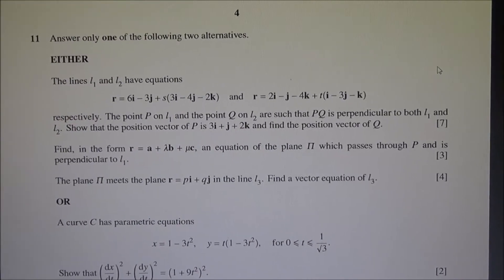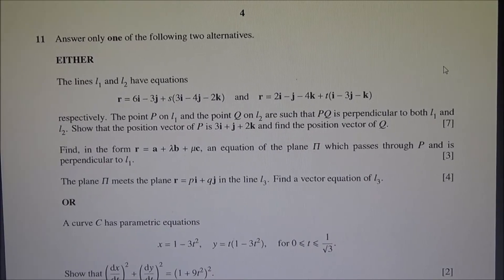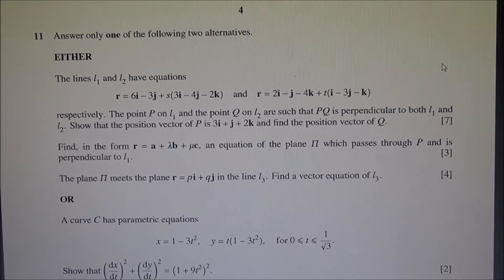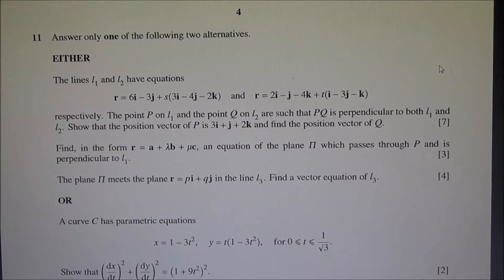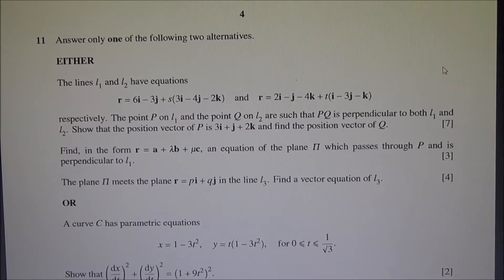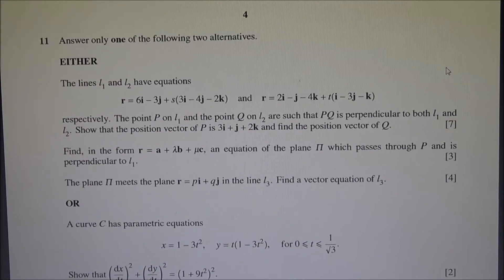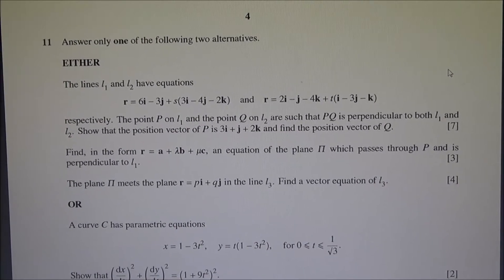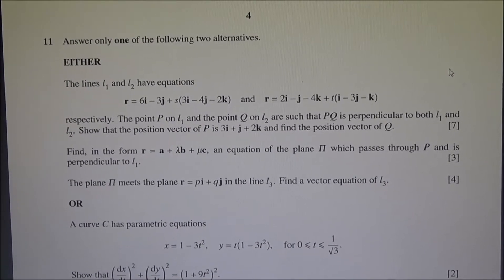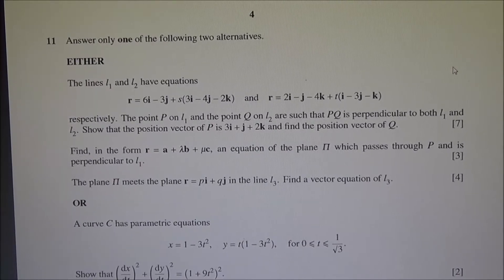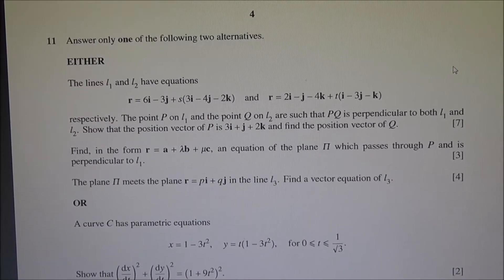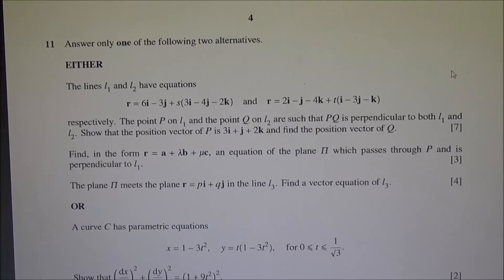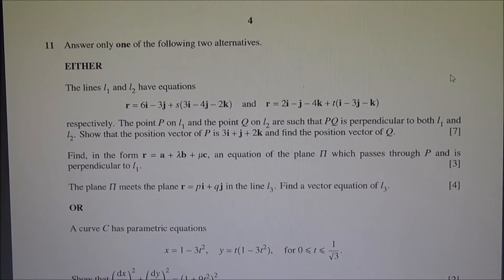For the second part, find in the form R equals A plus lambda B plus mu C an equation of the plane pi which passes through P and is perpendicular to L1. The plane pi meets the plane R equals pI plus qJ in the line L3. Find a vector equation of L3.